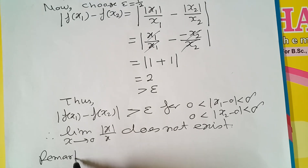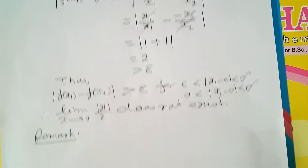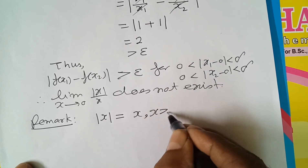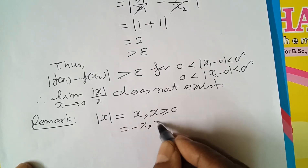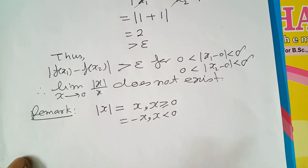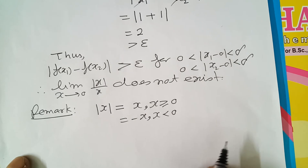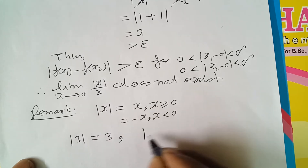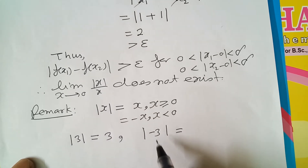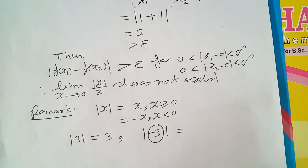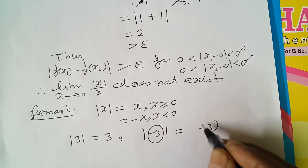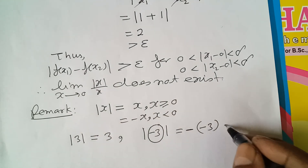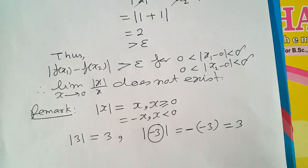यहाँ पर एक छोटा सा remark — mod x के बारे में: mod x की value plus x for x positive, minus x for x negative। यह definition of mod x है। यह definition कैसे काम करती है — जैसे mod 3 निकालना हो तो mod 3 की value plus 3। mod of minus 3 निकालना हो तो ध्यान दीजिए — mod के अंदर यह negative number है। mod को remove करो और negative sign लगाओ तो यह right हो जाएगा; negative sign नहीं लगाओगे तो wrong हो जाएगा।